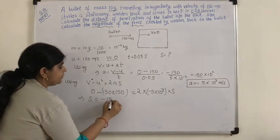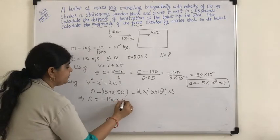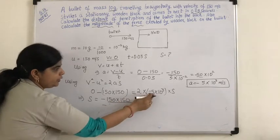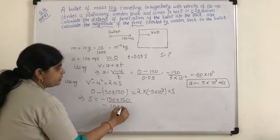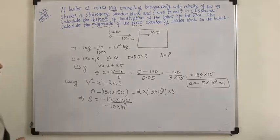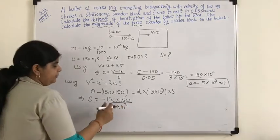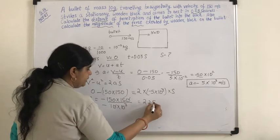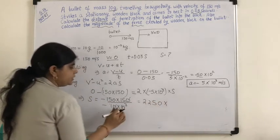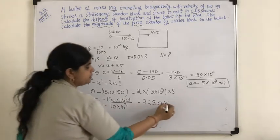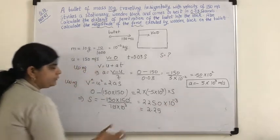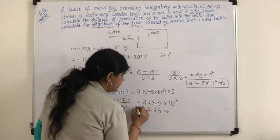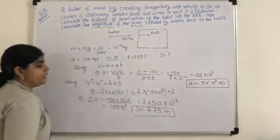So I will just write it down: minus 150 into 150 whole divided by minus 2 into 5 into 10 to the power of 3. Cancelling gives 15 into 15 which is 225, with 10 to the power of minus 3 remaining, giving 2.25. So the distance traveled is 2.25 meters.